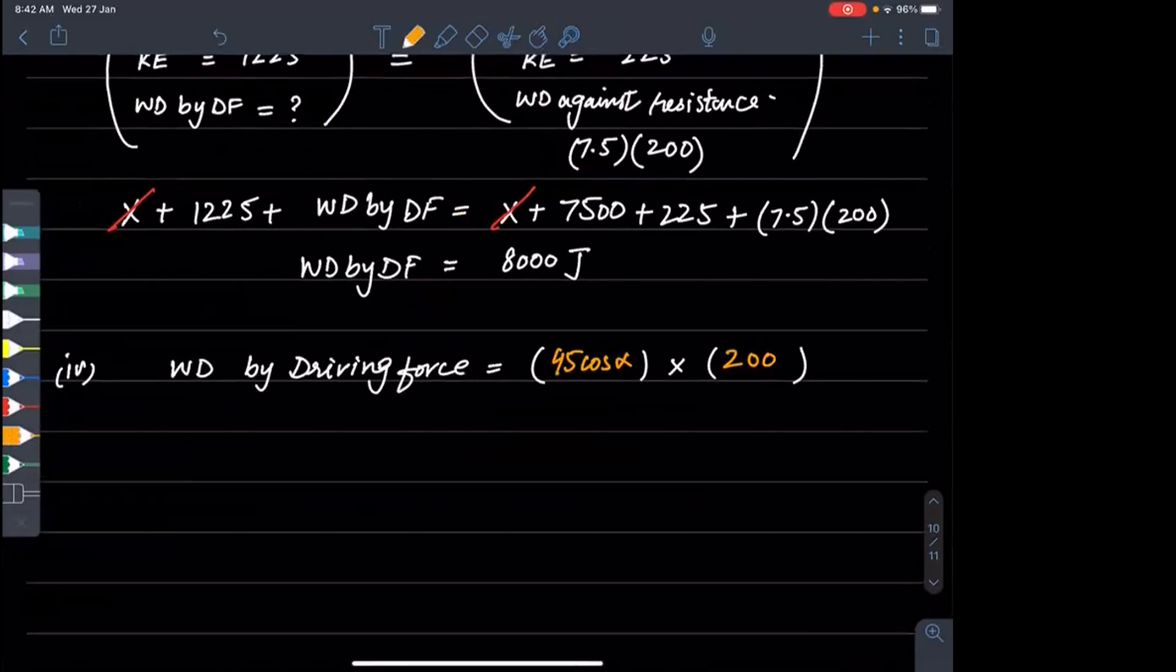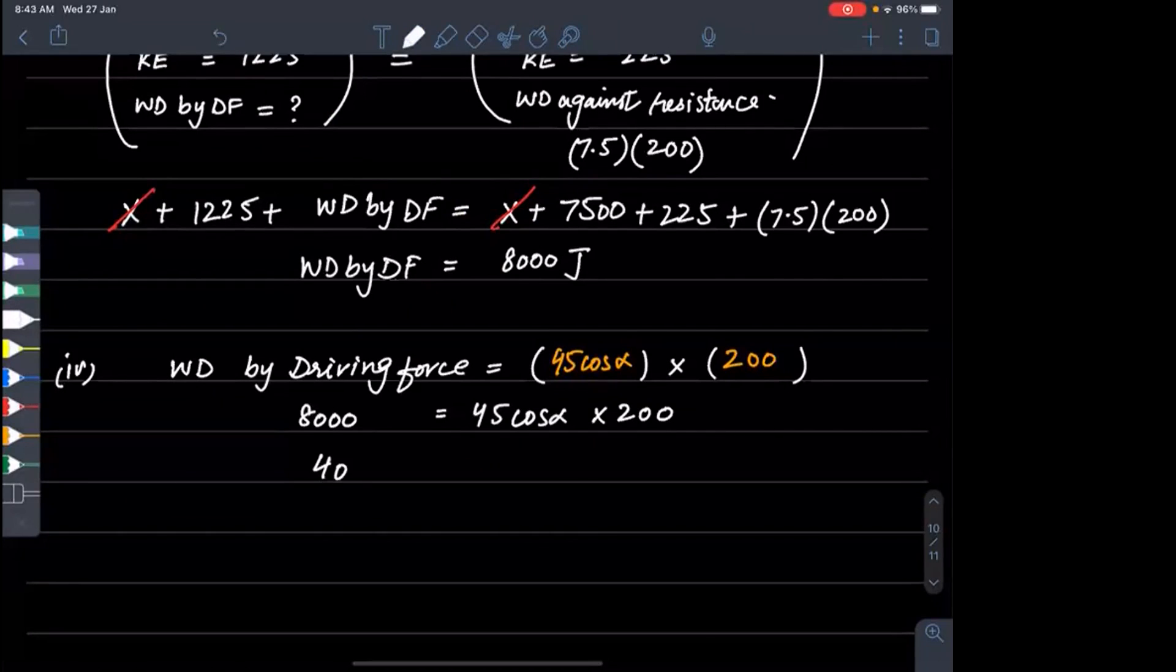From the previous part, work done by driving force was 8000. So 8000 equals 45 cos alpha times 200. This gives us cos alpha equals 8 over 9, from which we can find alpha.